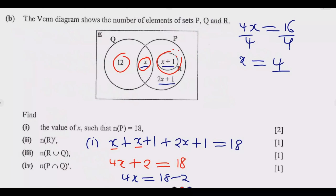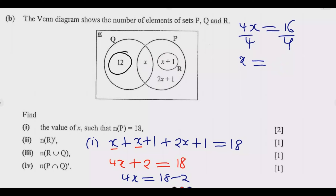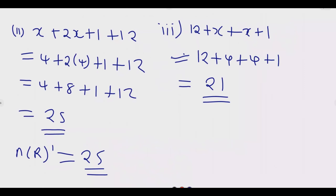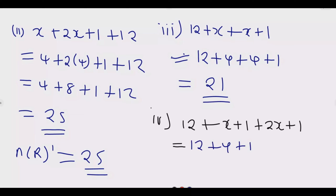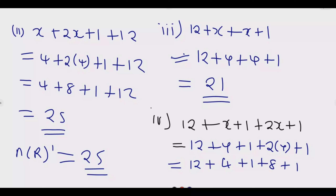For Roman numeral 4, we find the number of elements in P intersection Q complement — that is, elements in P but outside Q. These are: 12, (X + 1), and (2X + 1). Substituting X = 4: 12 + (4 + 1) + (2×4 + 1) = 12 + 5 + 9 = 26. So 26 is the answer.